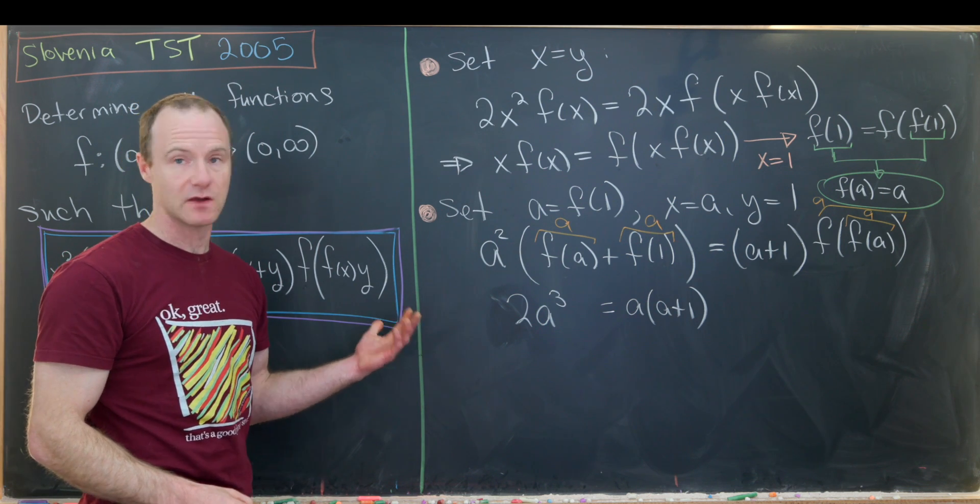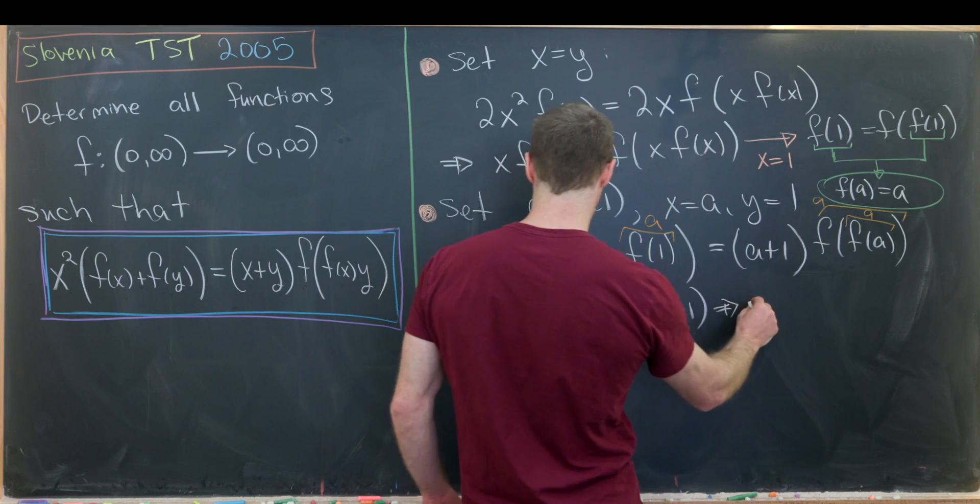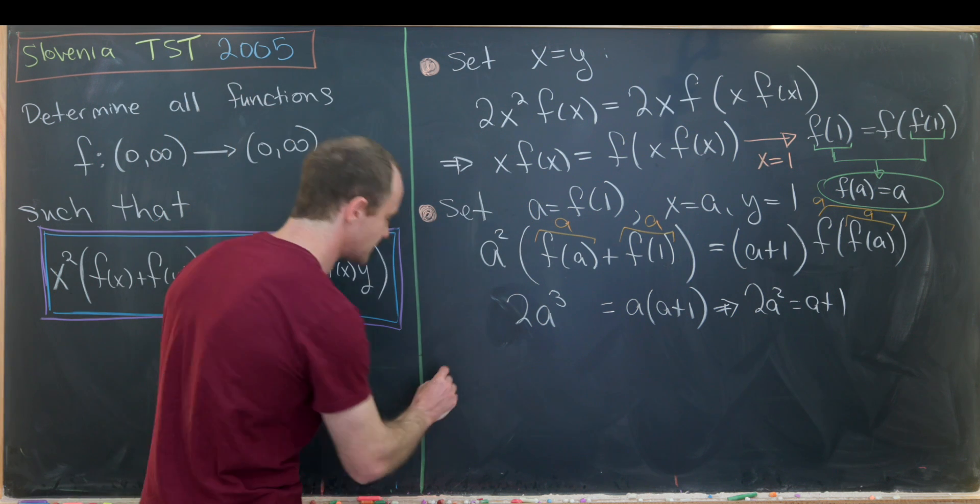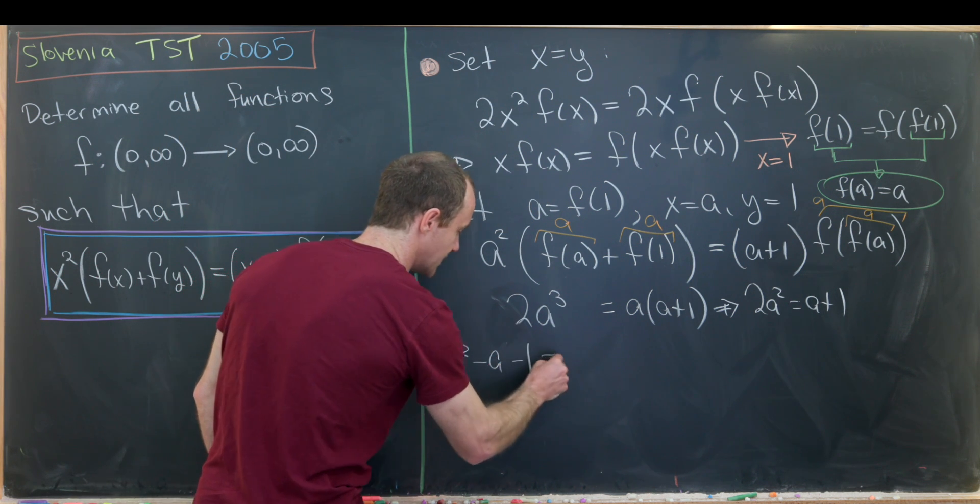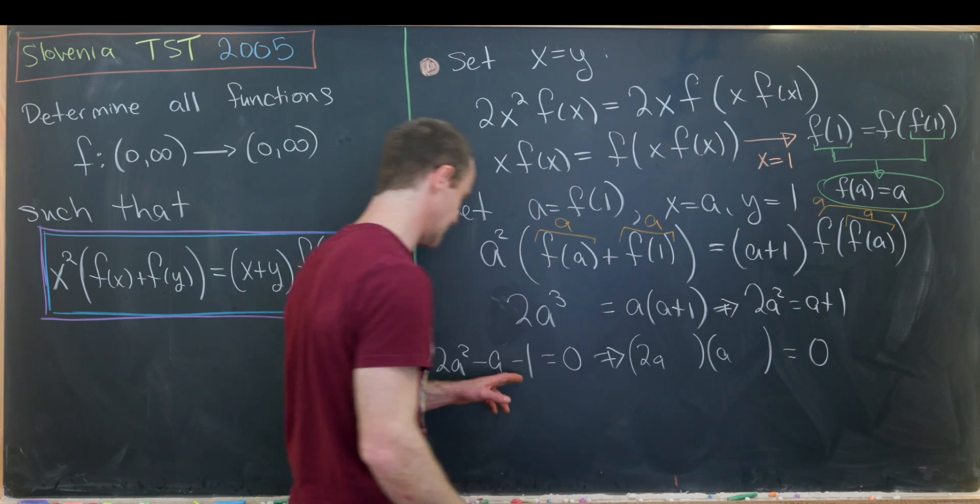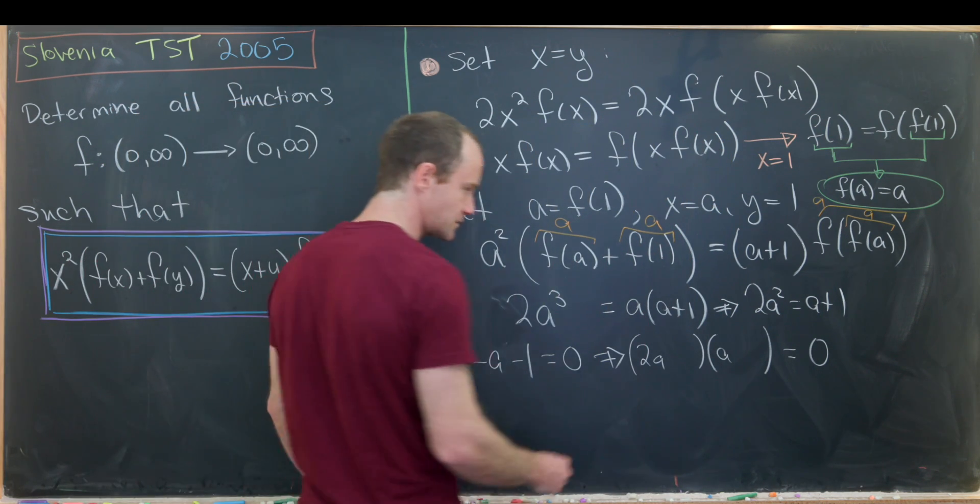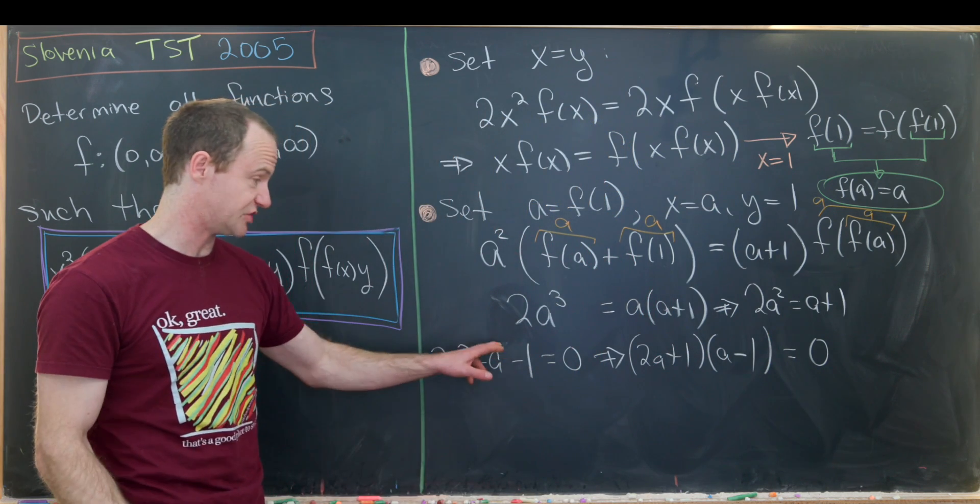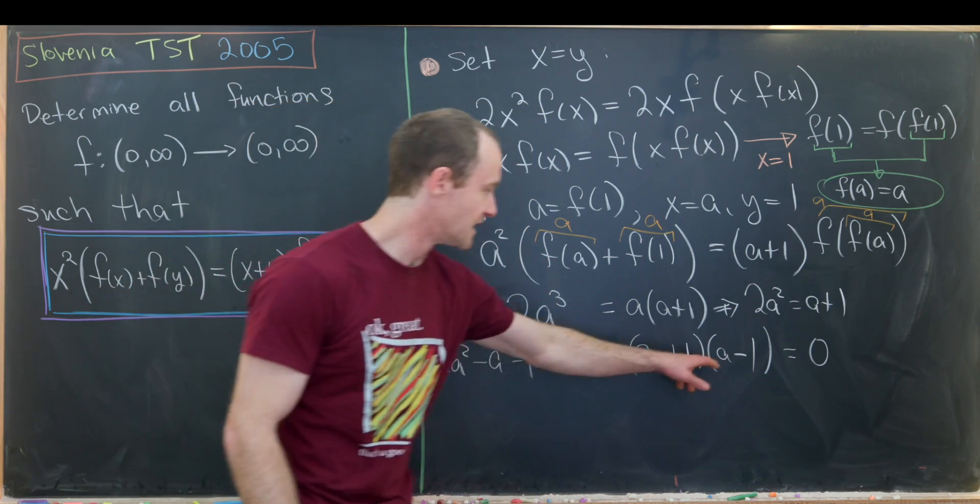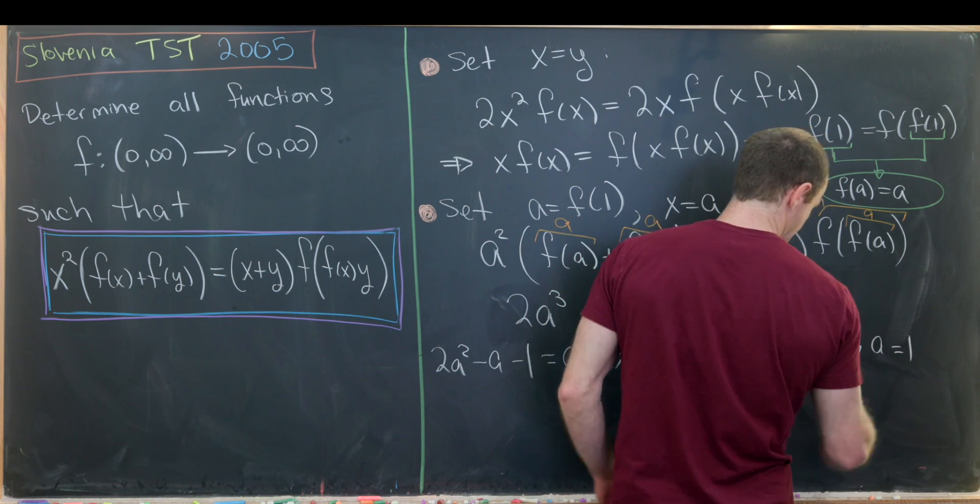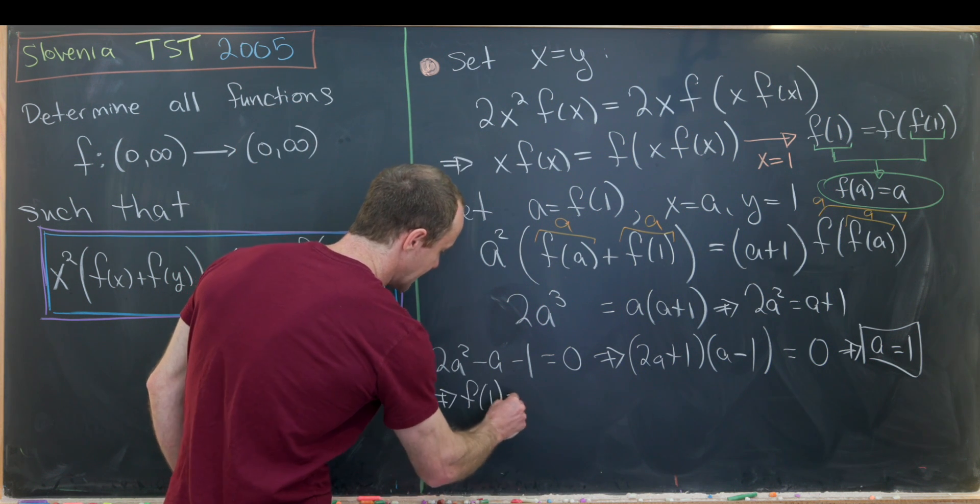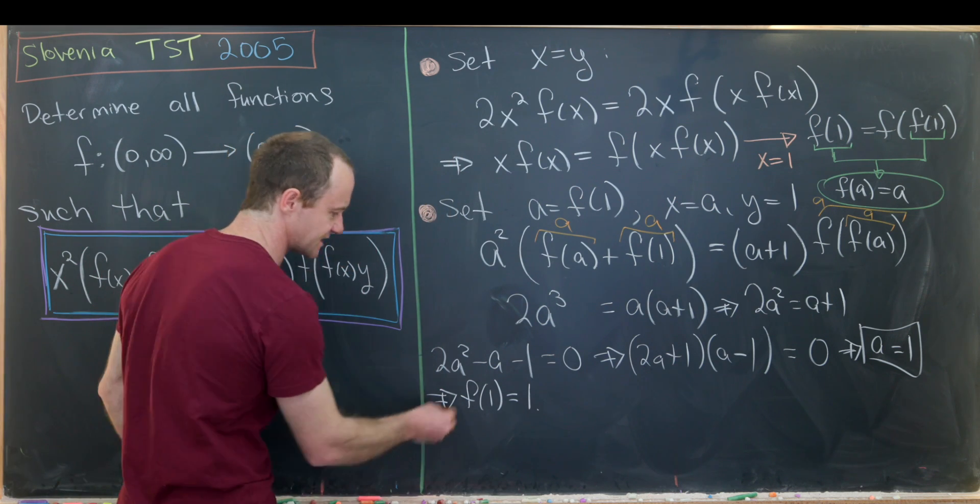Now we can divide both sides by a. We're allowed to do that because a is not equal to zero. And that gives us 2a² = a + 1, which is a quadratic equation for this unknown a. So that means 2a² - a - 1 = 0. And then we can factor that as (2a - 1)(a + 1) = 0. Notice this guy gives us a equals minus one-half, which doesn't make any sense because we know that a has to be a positive real number. This one gives us a equals one. So now we know that a equals one. So that's a good bit of information because that really means that we know that f(1) = 1.